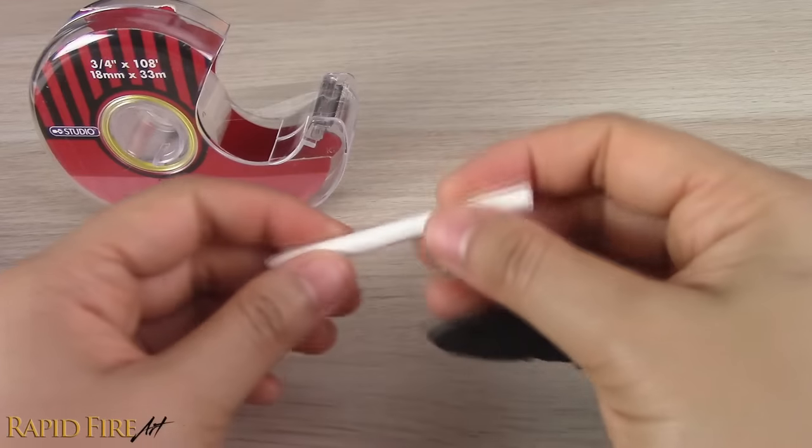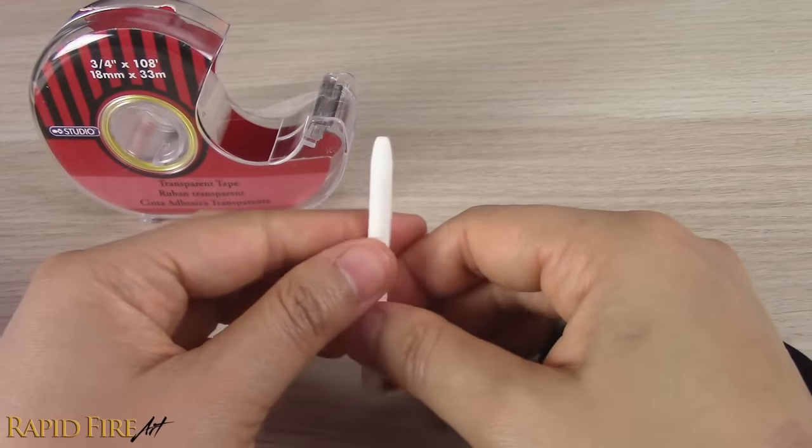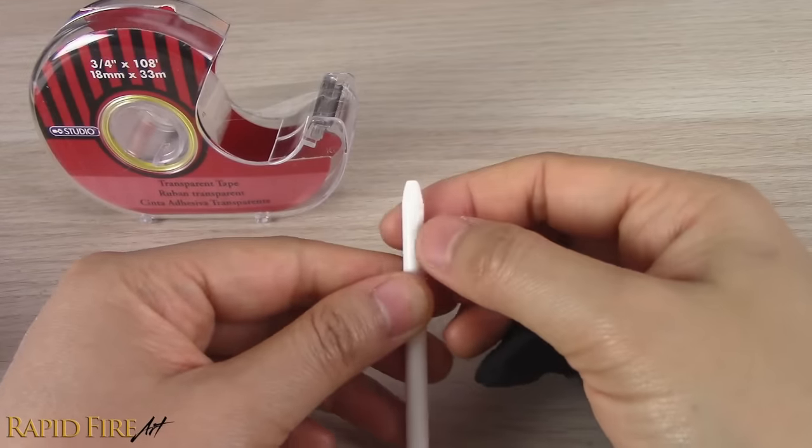Look for the end that's not hollow, and sharpen it using a razor, so that the blending stump looks like a pencil.